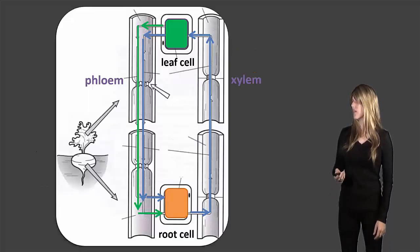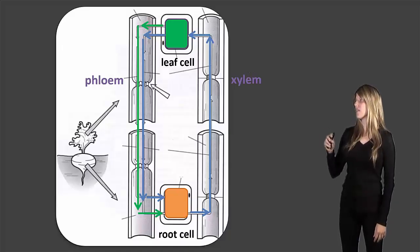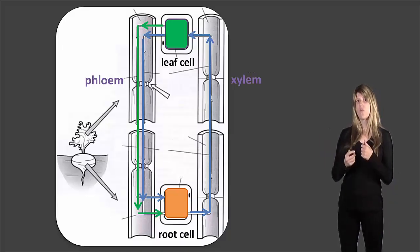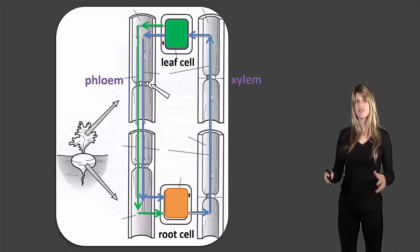So let's take a look at that picture. Our xylem and phloem—you can see in the root cell we would create or we would get water from the ground and also dissolved minerals in that water.